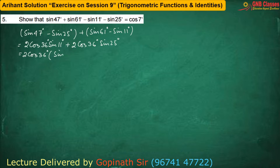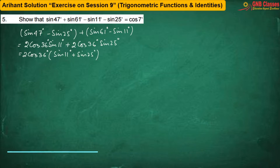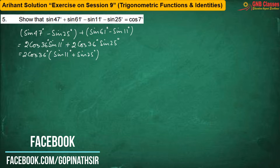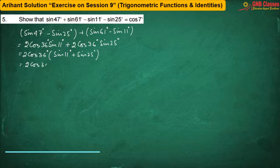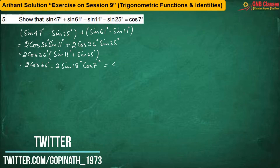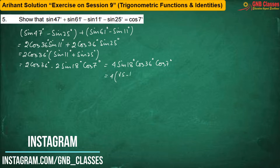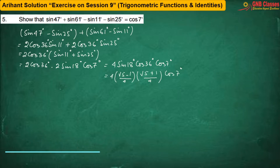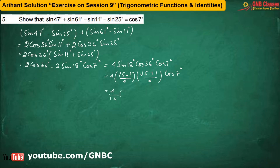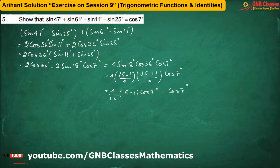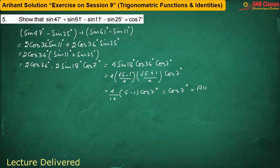So we are having sin11° + sin25°. Applying the formula sin C + sin D, we are getting. Now replacing the value of sin80° and cos36° we get, which is nothing but cos7°, which is nothing but the right hand side.